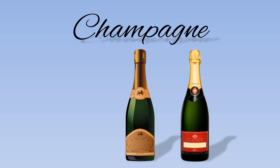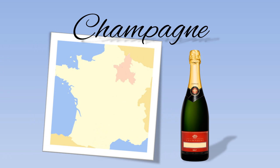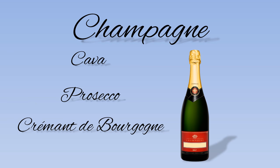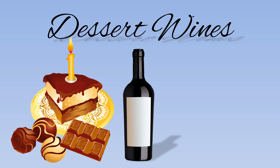Champagne is a type of sparkling wine, but there is a distinct difference between the two. Champagne is the name of a region in France. By law, wines may only be called champagne when they are made only from grapes grown in this region and produced according to strict guidelines. Popular sparkling wines include Cava, Prosecco, and Crémant de Bourgogne.